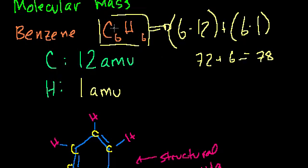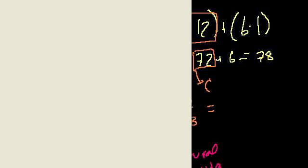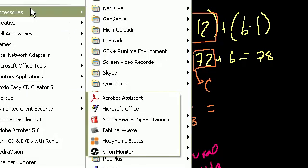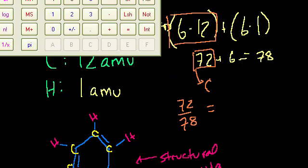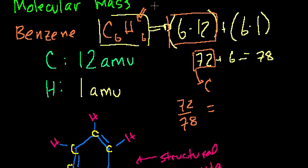Now, what if someone said, what percent of benzene is carbon? Well, then you say, the carbon piece of benzene is 72 atomic mass units. So what percentage of benzene is carbon? It's 72 over 78. The whole thing is 78. So 72 divided by 78 is equal to 92.3%. So benzene is 92.3% carbon by mass. And of course, the remainder, the 7.7%, is going to be hydrogen.